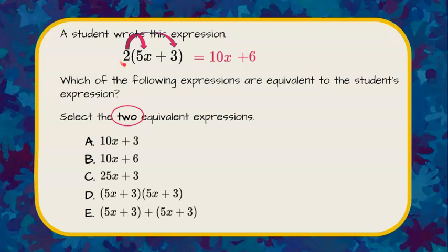So when you distribute a factor on the outside, you must multiply it to both terms on the inside. These are not the same term, they are not like terms. One has a variable and one is just a constant value. So these cannot be combined.